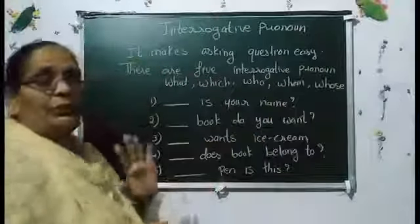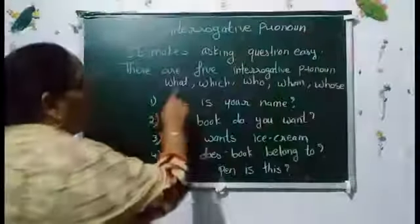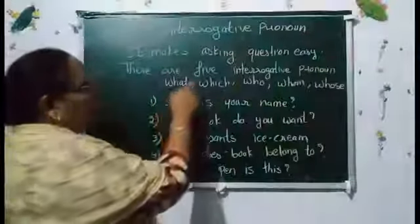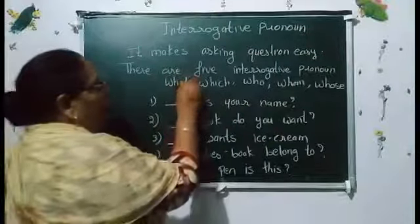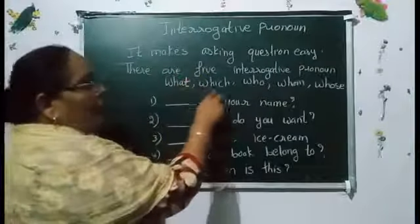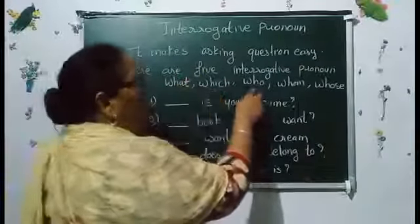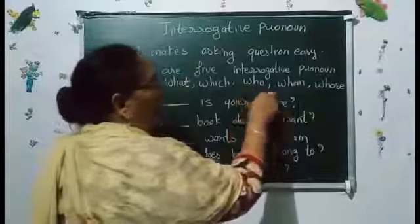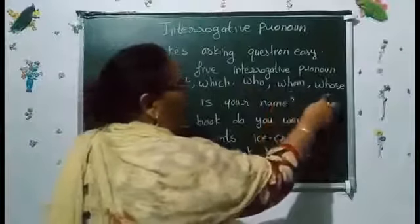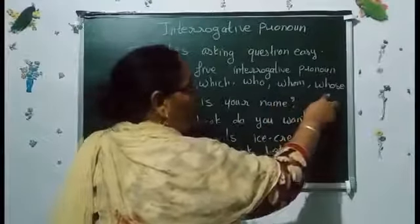How many interrogative pronouns are there? Five. They are: What (kya?), Which (kaun sa?), Who (kaun?), Whom (kisko?), and Whose (kis ka?).